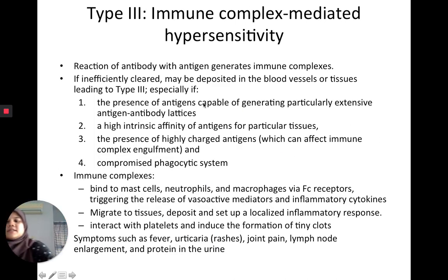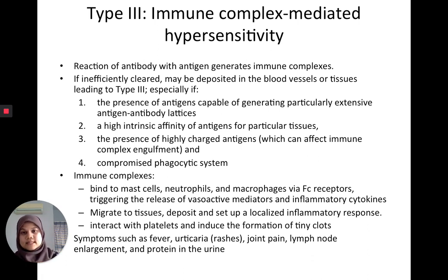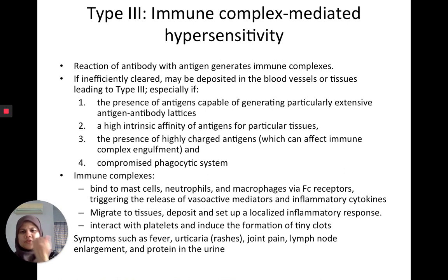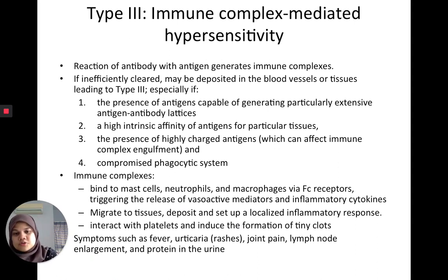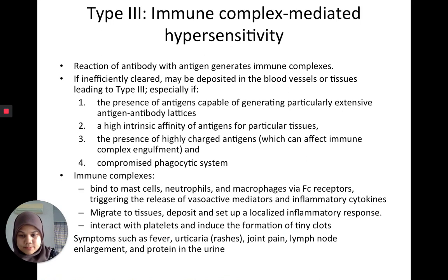Another type is type 3 — immune complex-mediated hypersensitivity. When an antibody reacts with an antigen, immune complexes are usually cleared; when they're not cleared, they deposit in blood vessels or tissues, and this leads to type 3 hypersensitivity. If antigens produce a lot of antigen-antibody lattices, or if there's a high affinity for particular tissues, these complexes stick in specific tissues and bind to mast cells, neutrophils, and macrophages, triggering vasoactive mediators and inflammatory cytokines that cause constant localized inflammation.